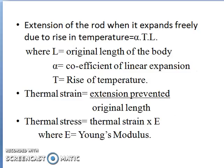Let us assume that the body is heated. The extension of the rod when it expands freely due to the rise in temperature is given by alpha × T × L, where L is the original length of the body, alpha is the coefficient of linear expansion — a property of the material — and T is the rise in temperature.